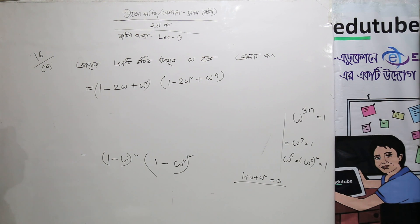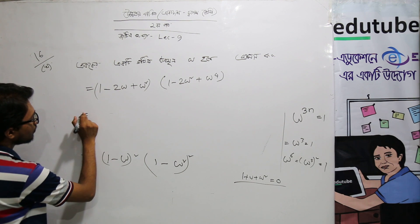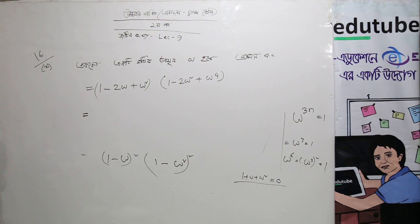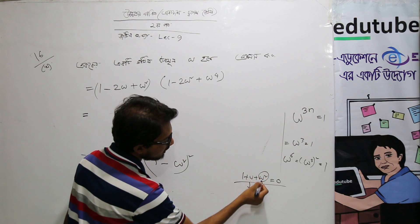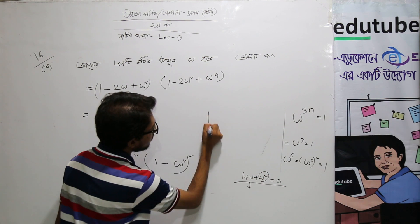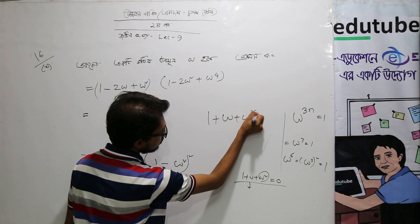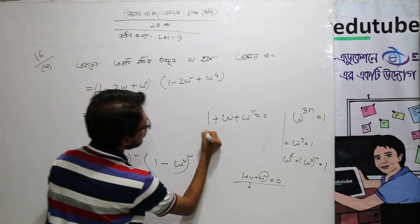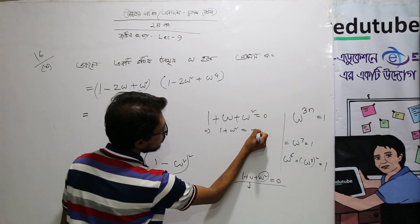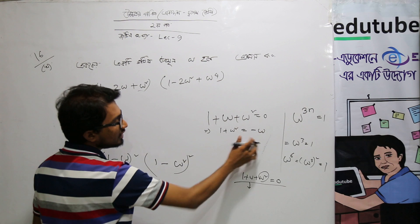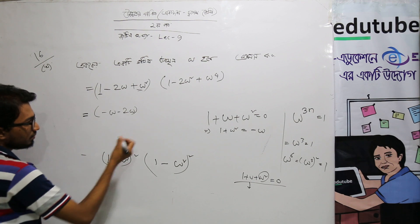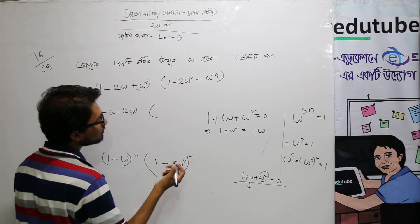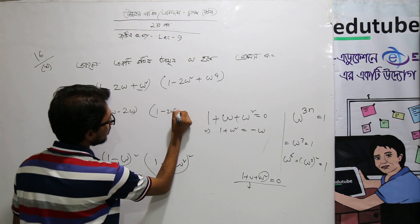We need to write this. Since 1 plus omega plus omega squared equals to 0, we have 1 plus omega squared equals to minus omega. So we put minus omega into minus 2 omega, and ultimately omega equals 1 minus 2 omega squared plus omega.